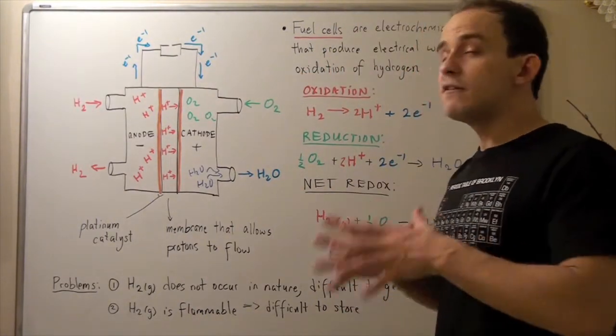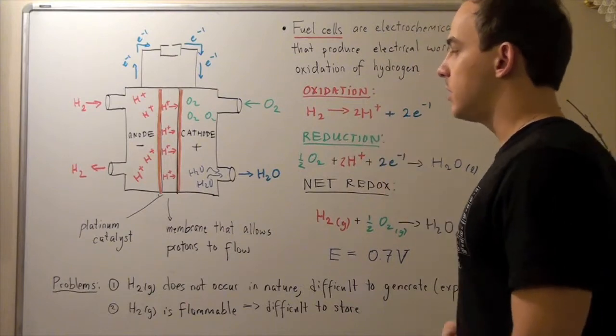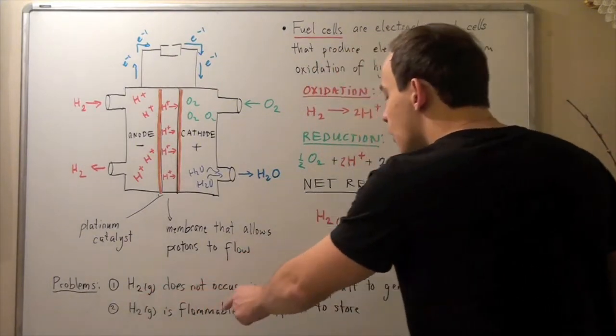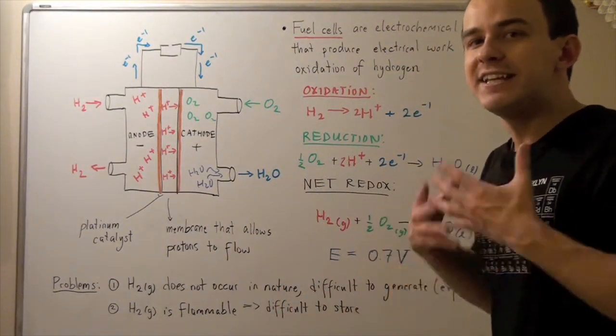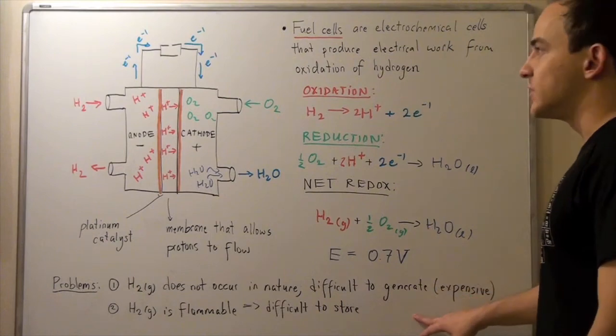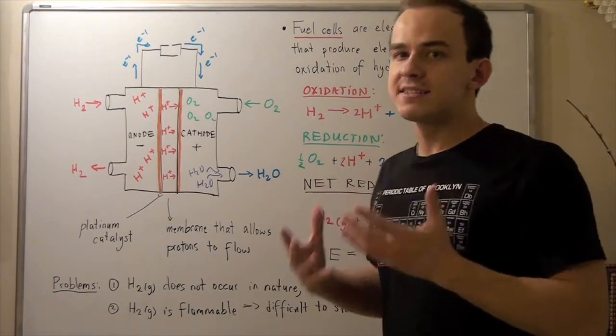So, we have a few problems with our fuel cells. The first major problem is diatomic H2 molecule does not occur in nature. And it's very difficult and takes a lot of energy and money to generate it. So, it's very expensive, and that's why places like NASA use it. It's probably a very bad idea to commercialize it because of its expense.